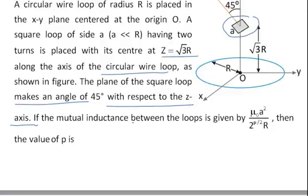Now if the mutual inductance between the loops is given by μ₀a² divided by 2 to the power P by 2R, then the value of P is.